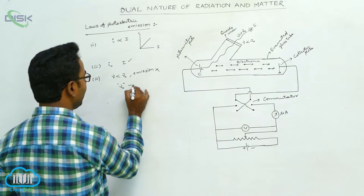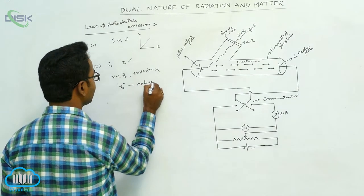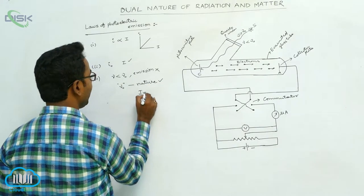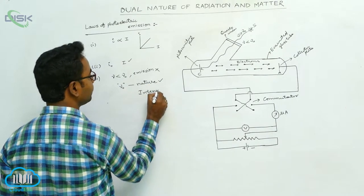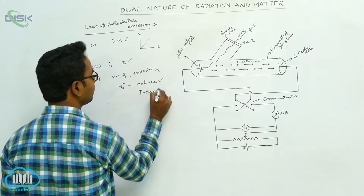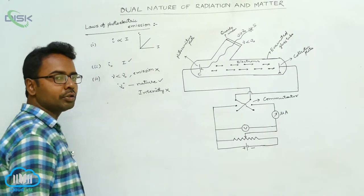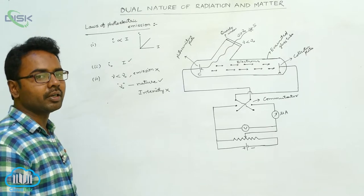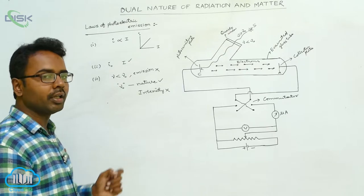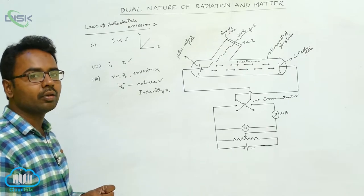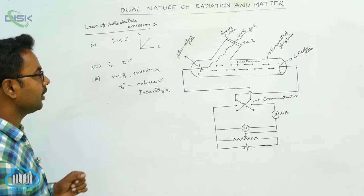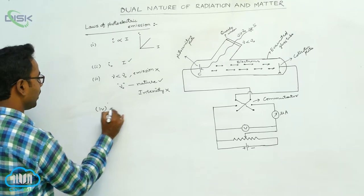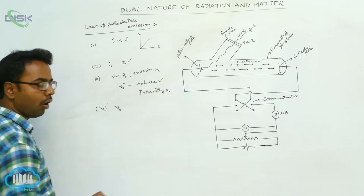Also, this threshold frequency ν₀ depends only on the nature of the metal surface. It does not depend upon the intensity of incident radiation. The threshold frequency depends upon the nature of the metal surface but not on the intensity of incident radiation.